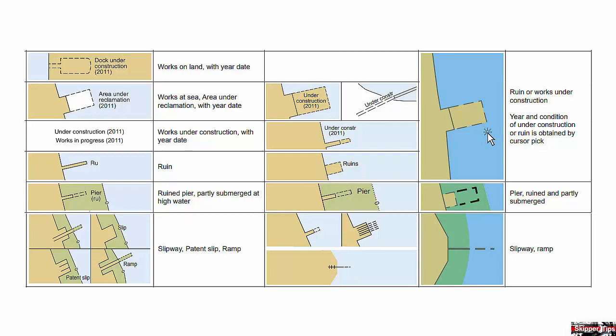These chart symbols and abbreviations come from chart number 1, offered by the National Oceanic and Atmospheric Administration, or NOAA. See the link below this video to download a free copy of chart number 1 from the NOAA website.